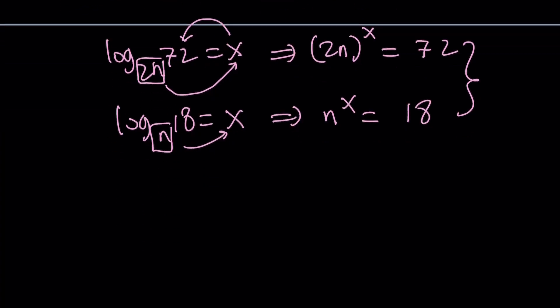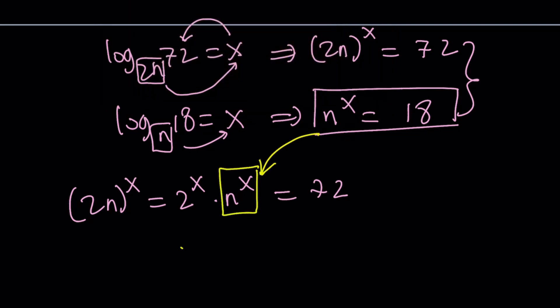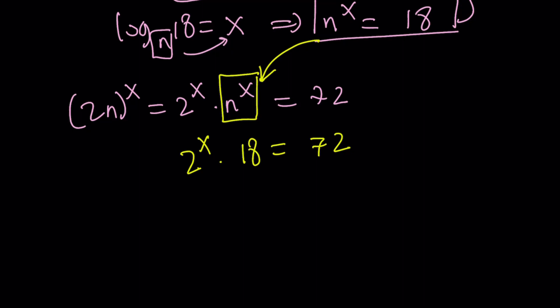Now we have like a system of equations, but this system is easy to solve because 2n to the power of x can be split up. We can write this as 2 to the x times n to the x, and that is equal to 72. And from the second equation, we do know that n to the power of x equals 18. So we can substitute that. We have n to the power of x here, and we know that it's equal to 18. This gives us 2 to the power of x equals 72 divided by 18, which is 4. And this gives us x equals 2.